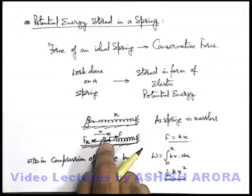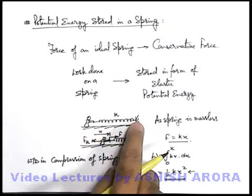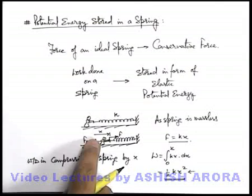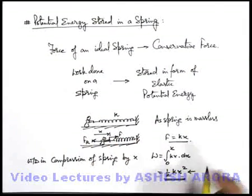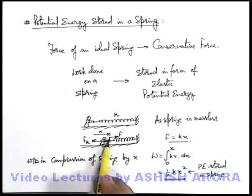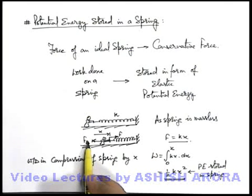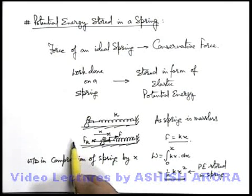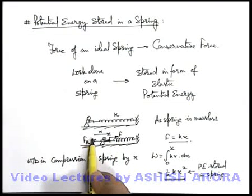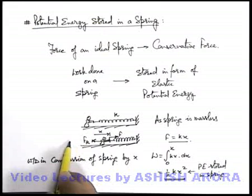This is the amount of work done in compression of the spring by the boy. As the spring force is a conservative force, whatever work the boy has done is stored in the form of potential energy. So in the natural length the spring was relaxed, there was no energy stored. But in the compressed state, the spring has some energy stored in it — this half kx squared is the potential energy stored in the spring. This energy can also be retrieved back. When the boy stops pushing the spring, the spring is still applying the restoring force, because of which the boy will be displaced towards the left, and the boy will gain kinetic energy while sliding to the natural position.